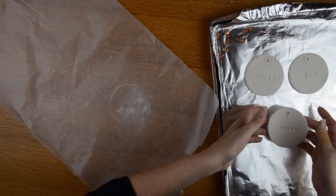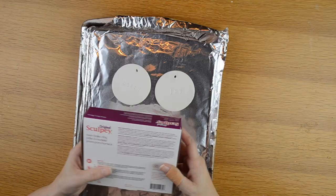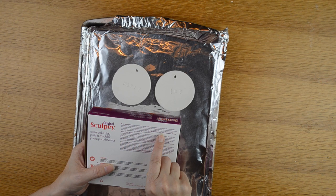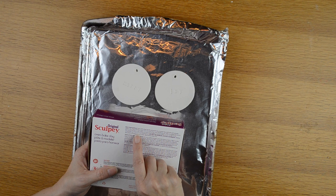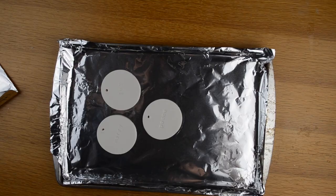I will be putting these in the oven for 275 degrees Fahrenheit. That is 130 degrees Celsius and I'm going to bake it for 15 minutes per one quarter inch which is six millimeters.